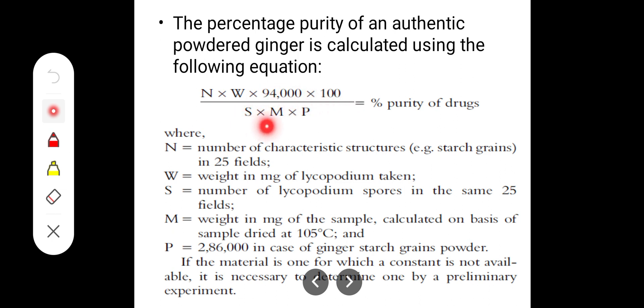Here N means the number of characteristic structures like starch grains in 25 fields. We are using the Neubauer chamber, the hemocytometer used for WBC counting. It has 25 fields. In those fields, the number of starch grains we count becomes the value for N.